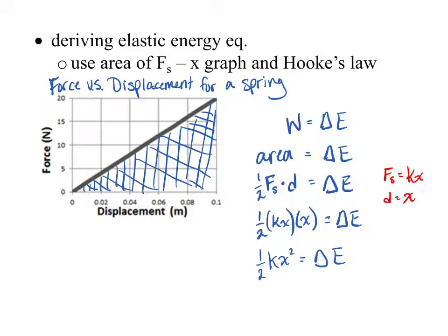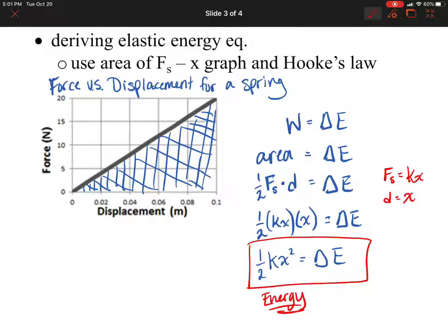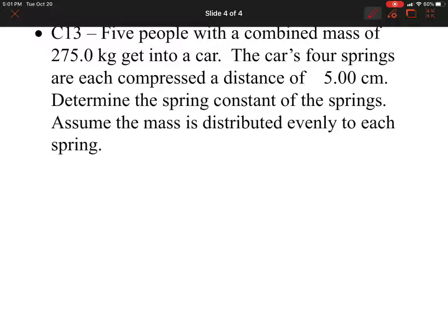So, that tells us that the energy of a spring is one-half kx squared, and the force of a spring is k times x. A lot of people get those two equations mixed up. So remember: when looking for the potential energy of a spring, we use one-half kx squared. If we're looking at the force exerted by a spring, we use negative kx. Please remember that.